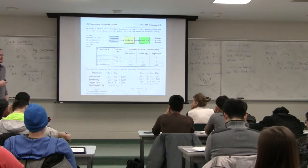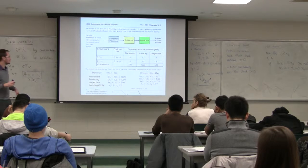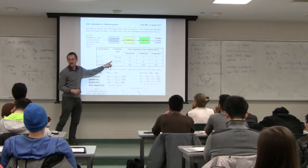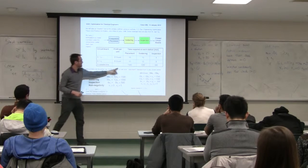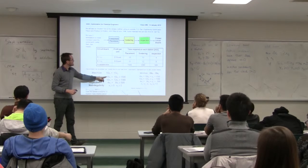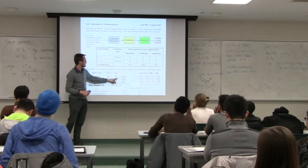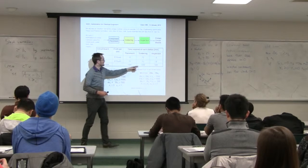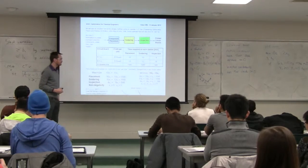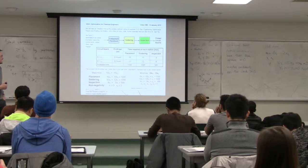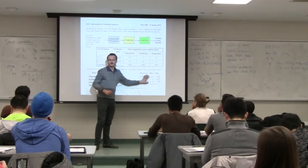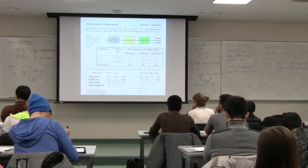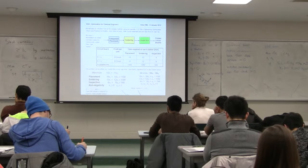Convince yourselves the problem can be transcribed mathematically. Maximize 10X1 plus 15X2, subject to: 16X1 plus 10X2 ≤ 1,500; 10X1 plus 12X2 ≤ 1,000; 4X1 plus 8X2 ≤ 500. The standard form is shown on the far right-hand side. Let's get to the more interesting things now about active constraints, degrees of freedom, slack variables, and how the simplex method works.